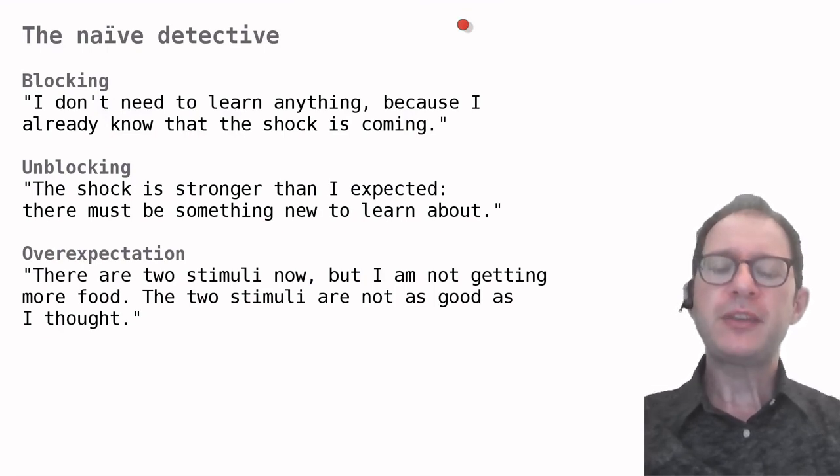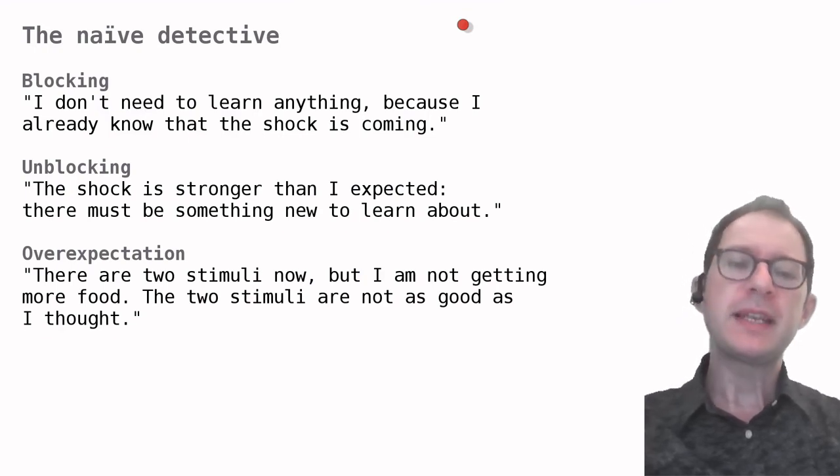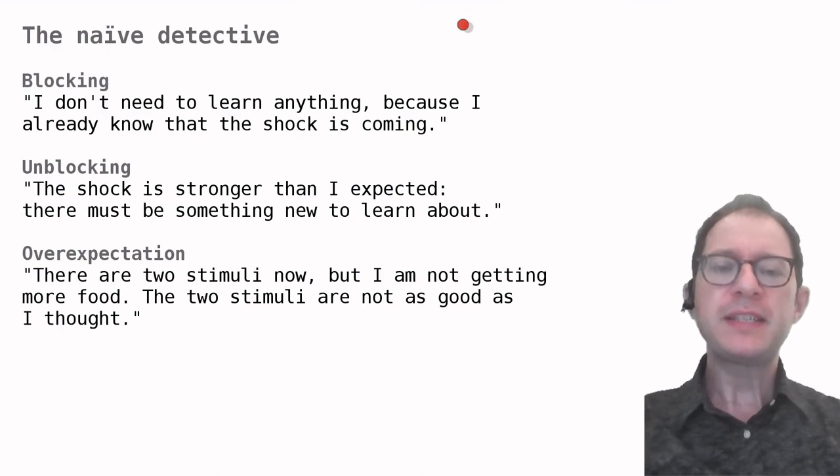Lastly, in overexpectation, the rats first learn that all three stimuli signal an equal amount of food. When we put two of the stimuli together, maybe they are thinking that more food will come, some because of the first stimulus and some more because of the second stimulus, and then they are disappointed, so to speak, when they get the same amount. And maybe when they are disappointed, they think the stimuli are worth less. This might be why we see the rats expecting little food after the light in the final test.